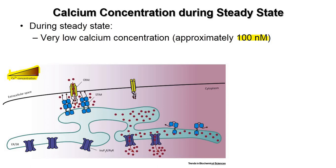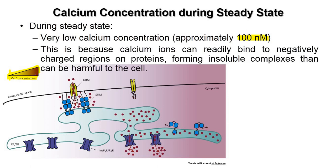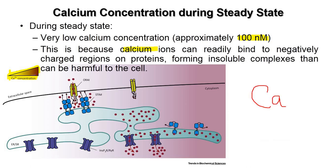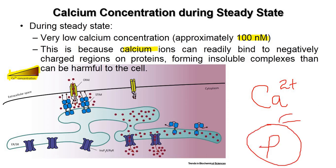Why is calcium so low during steady state? Calcium ions, Ca2+, can readily bind to negatively charged regions of proteins, forming insoluble complexes. If these insoluble complexes deposit in the cytoplasm, they would be harmful to the cell. That is the reason calcium is always maintained at a very minimal concentration of 100 nanomolar within the cytosol at steady state.